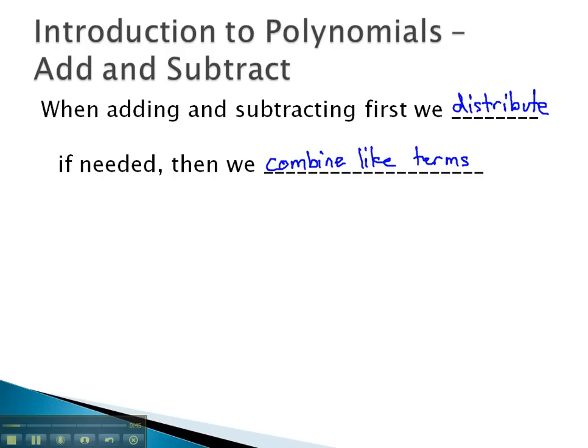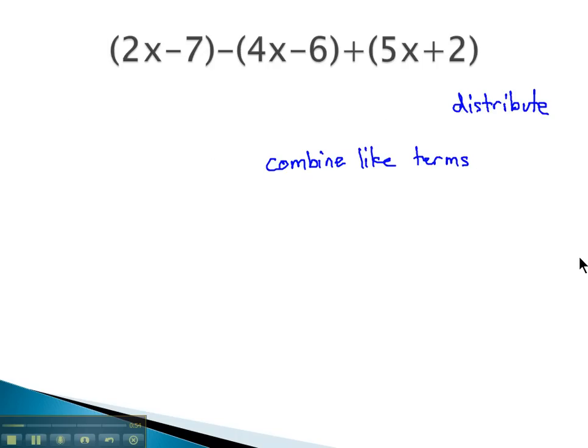Let's take a look at some examples where we go through these two steps. First, distributing any negative signs or opposite signs or subtraction signs. They're all the same thing. And then, combining like terms.